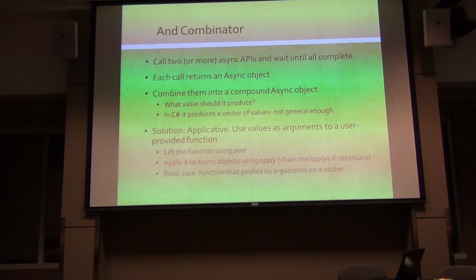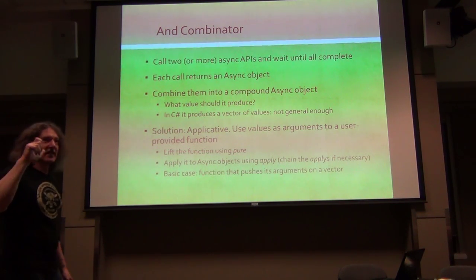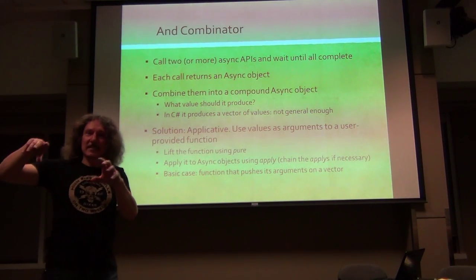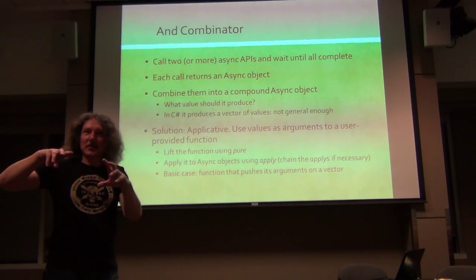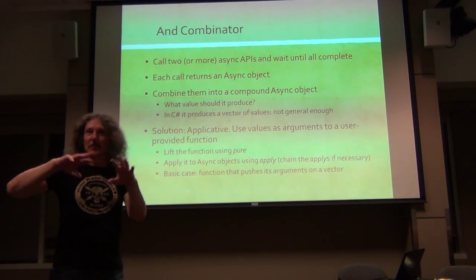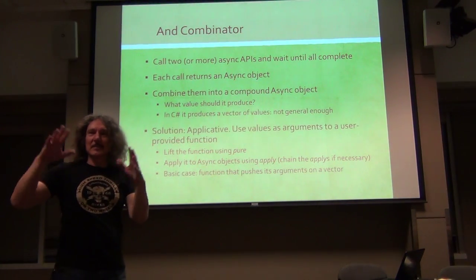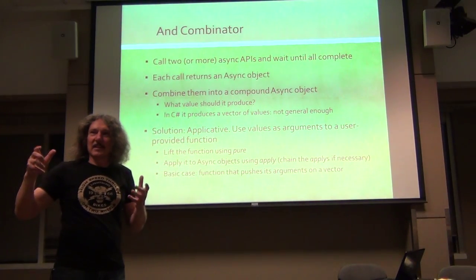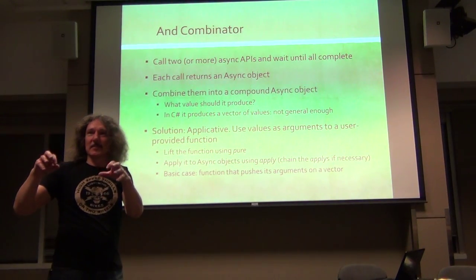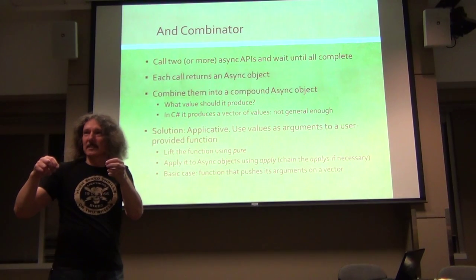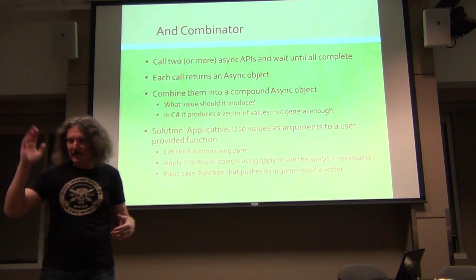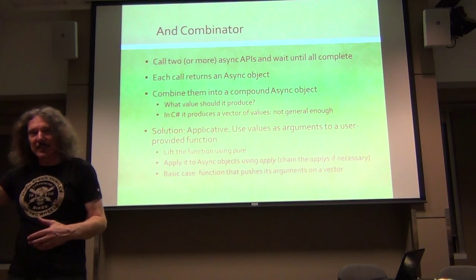Now we understand the AND combinator. It takes two async values and wants to wait for both of them and then do something with them. What C# did is: wait for them until they return values and put these values in a vector. But that's not general enough.